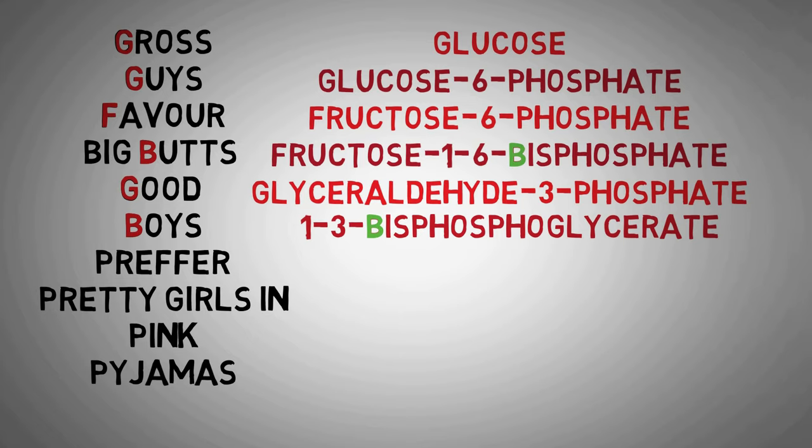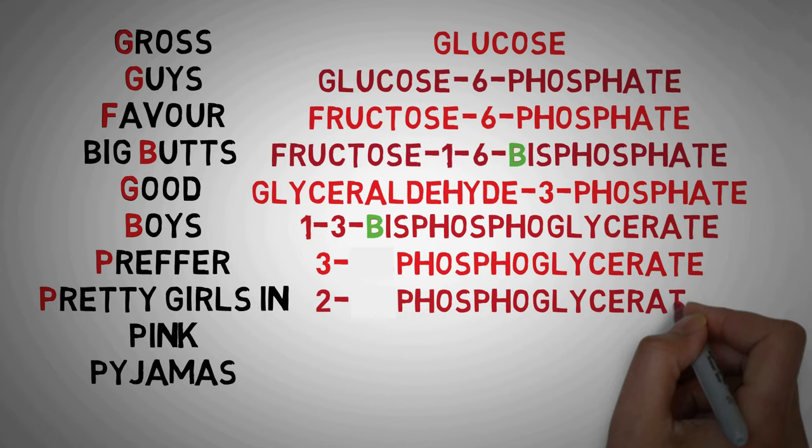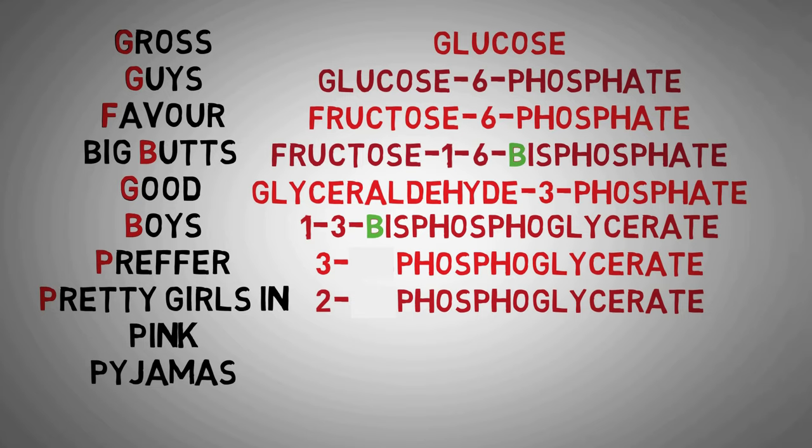The P in prefer stands for 3-phosphoglycerate, which is a product formed when we remove 1-phosphate from 1,3-bisphosphoglycerate. The next P in pretty stands for 2-phosphoglycerate, the product formed as a result of transfer of one phosphate group from the third position to the second position.